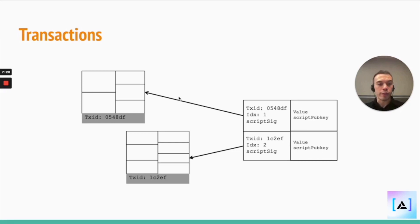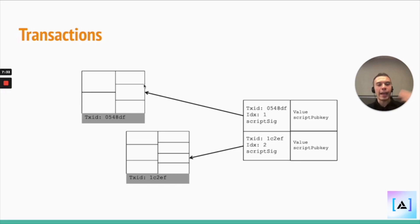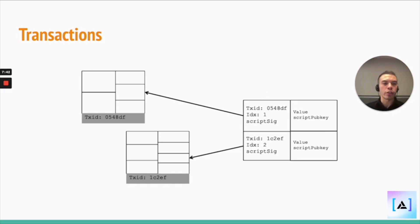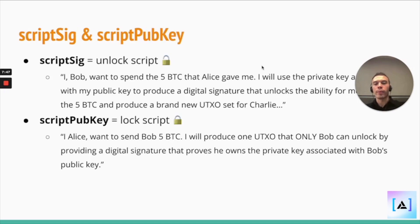And one of those outputs, say it was for me — I need to refer back to that specific output and produce what I need to produce, which is basically a digital signature stating that I own that private key, in order to further spend that UTXO.